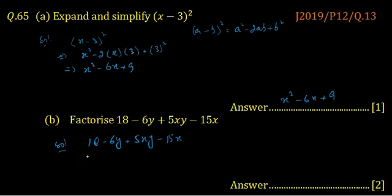So 18 and 6y, we can take 6 as common and the remaining is 3, because 6 multiplied by 3 is 18, and the minus y is remaining here because 6 is taken as common.